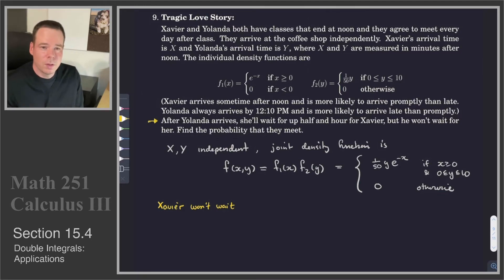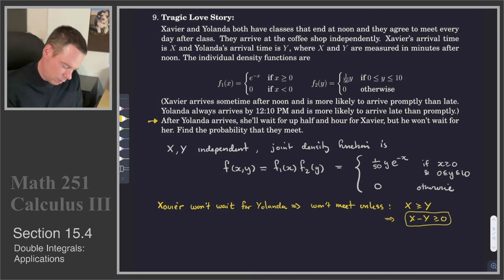When will they meet? Xavier won't wait for Yolanda. So that means they won't meet unless, if he won't wait, then Yolanda had better arrive before him. So Yolanda's arrival time has to be smaller than Xavier's arrival time. Or in other words, we need that X minus Y is greater than or equal to 0. So that's our first condition.